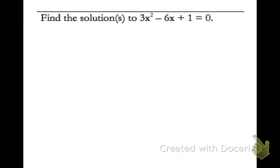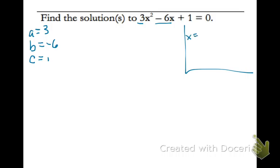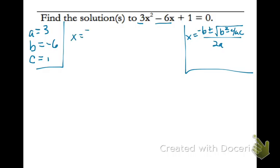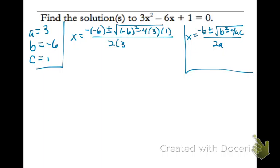Now let's look at our next example: solve 3x² − 6x + 1. Start by picking out your a, b — make sure you take the negative with it, it's negative 6 — and c, which is 1. I'll write the quadratic formula: x equals the opposite of b plus or minus the square root of b squared minus 4ac all divided by 2a. Plugging in our values: x equals the negative of negative 6, plus or minus the square root of (negative 6) squared — put that in parentheses so you remember to square that negative — minus 4 times 3 times 1, all divided by 2 times 3.